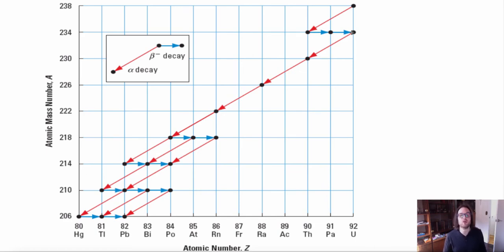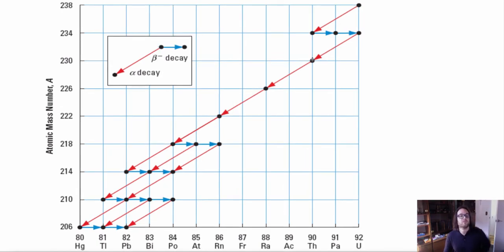Now after uranium-234, we are going to have several series of alpha decay. So then from thorium-230, we are going to end up going to radium-226 after another alpha decay. And then from radium-226, we are going to end up going to radon-222 with another alpha decay. And then we are going to have another alpha decay again. See this series happening? Until we hit polonium-218.